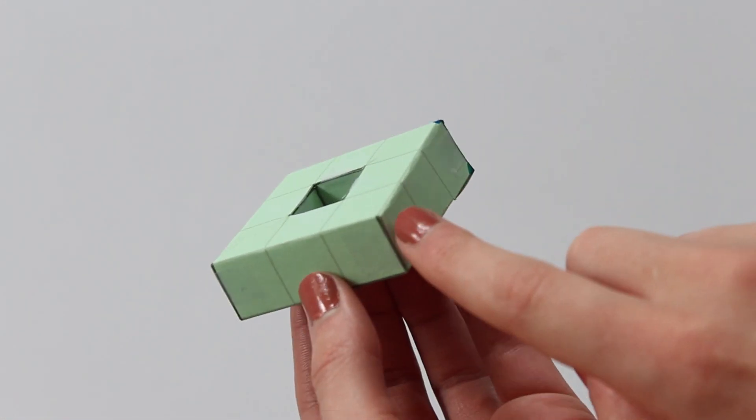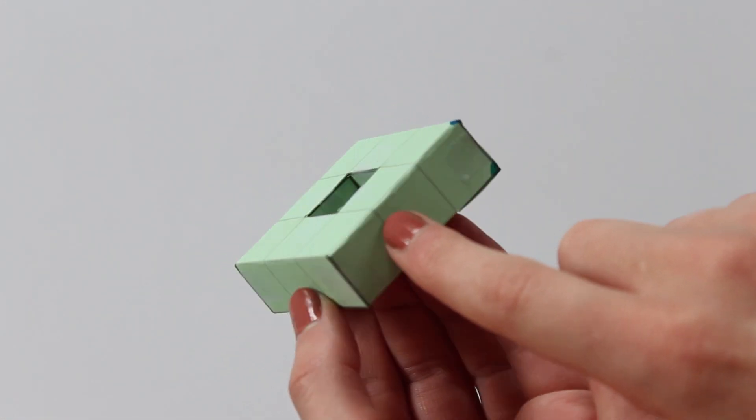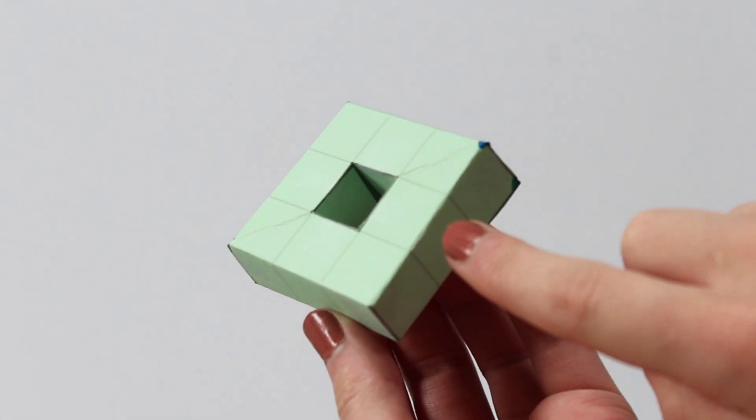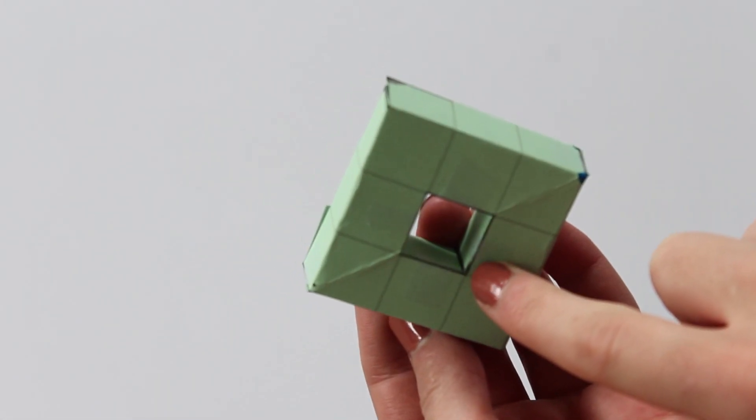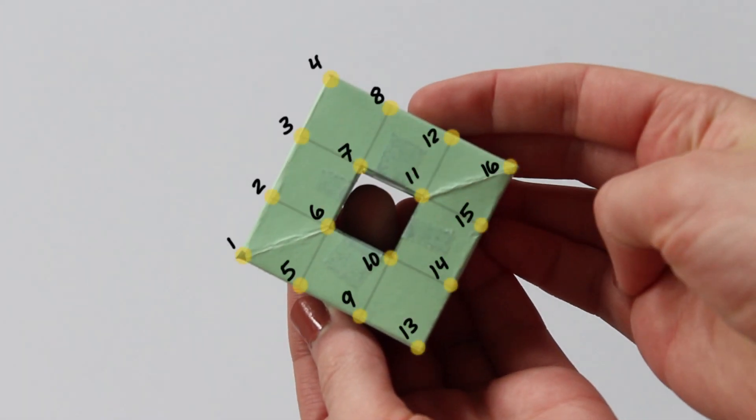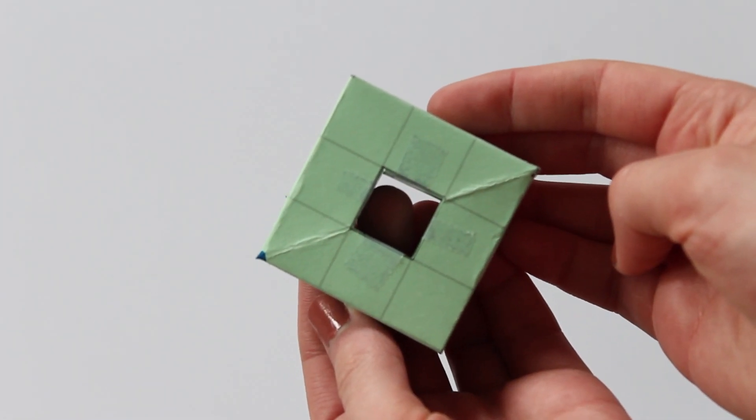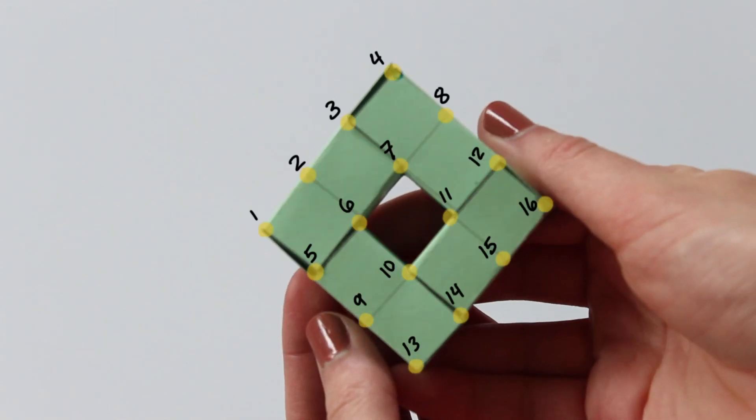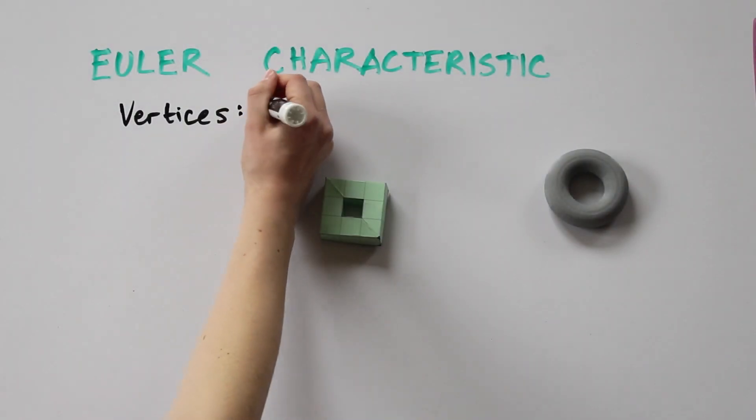This shape has vertices on the outside corners, vertices along the edges, and vertices in the inside corners. The top has 16 vertices, and the bottom also has 16, so there are 32 vertices in total.